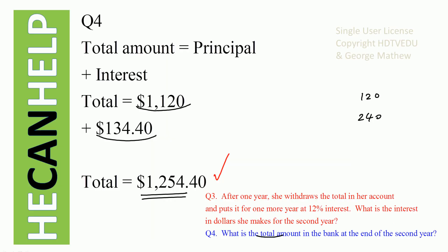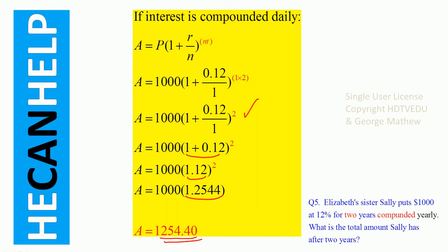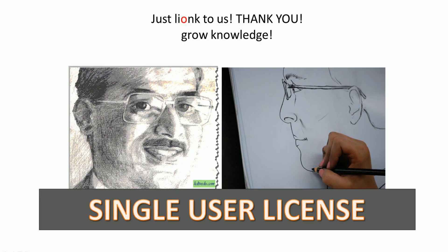Elizabeth withdrew the money after one year and put it back for one more year, and she got $1,254.40. Elizabeth's sister Sally put $1,000 at 12% for two years compounded yearly, and she gets the same amount. That is the nice thing about compound interest. This is George Matthew — please link to us, thank you.